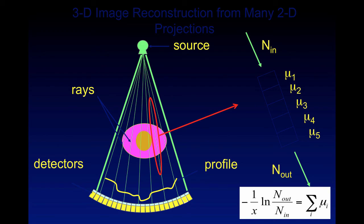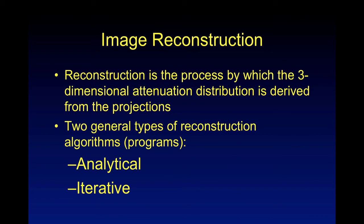The 3D image reconstruction uses many 2D projections. All along a ray, these are the ray sums: there's a mu1 attenuation coefficient for one voxel, mu2, mu3, mu4, mu5 — each for the different voxels along this ray, and then the additive ray sum with all the mu coefficients. Image reconstruction is the process by which the 3D attenuation distribution is derived from the projections. In MRI, we saw it was k-space to Fourier transform. There are two general types of reconstruction algorithms in CT: analytical and iterative. Mark Williams, a physicist in the School of Medicine, is an expert in this.